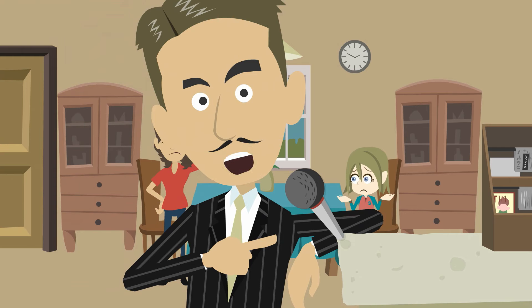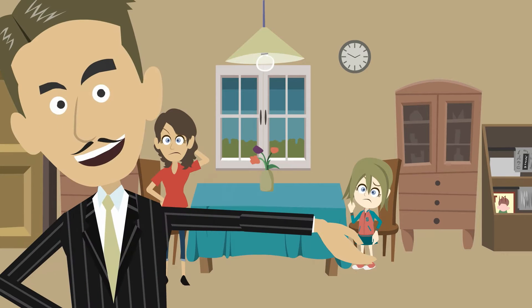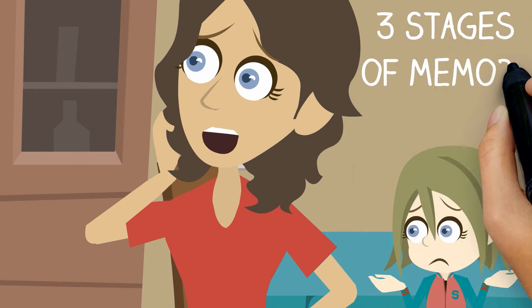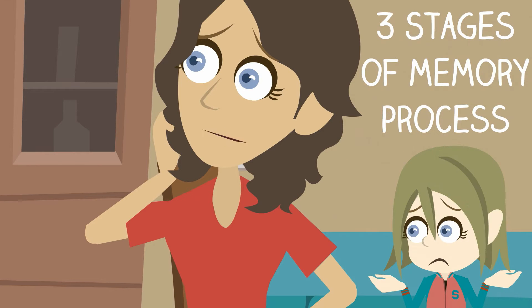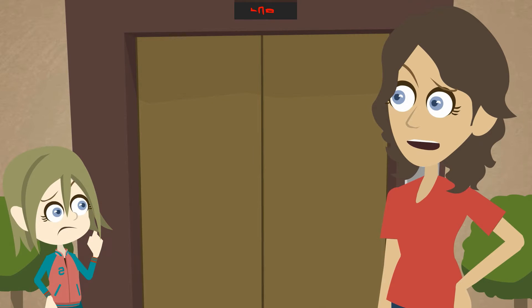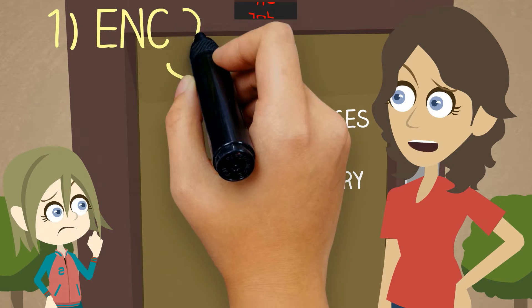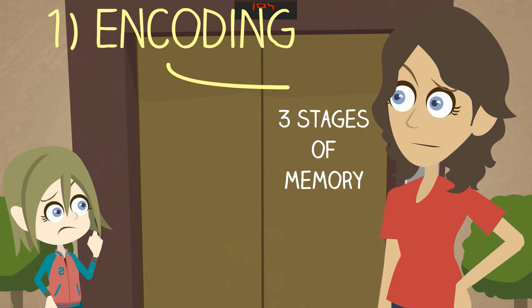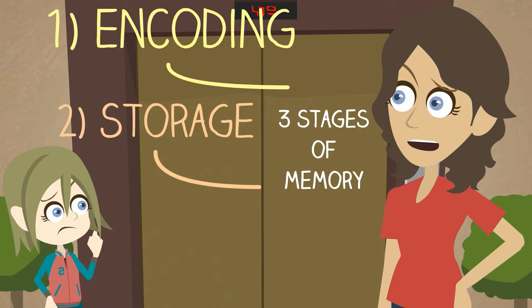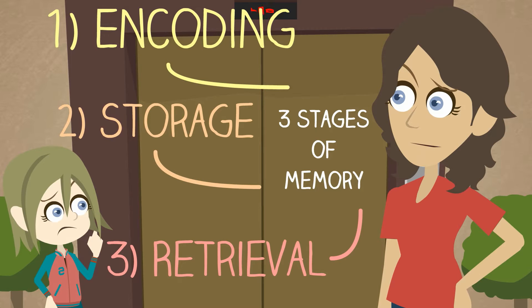In a world where almost everyone forgets, you remember, you know. There are three stages of memory process: encoding, storage, and retrieval.